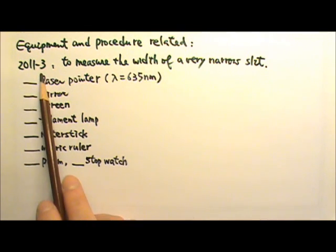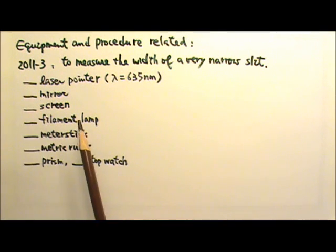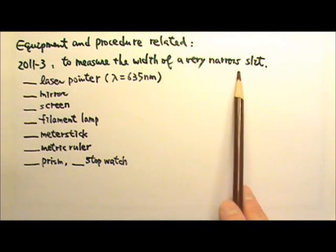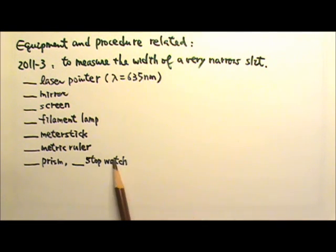For example, in problem number three of the 2011 exam, we're told that the purpose of the lab is to measure the width of a very narrow slit. You're given a list of items to choose from, and you're asked to sketch the lab setup and to outline the experimental procedure.